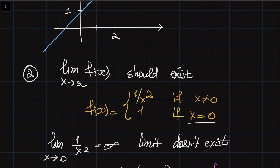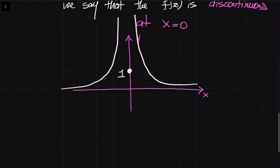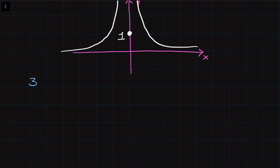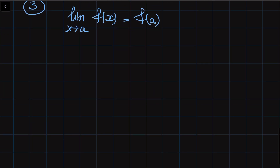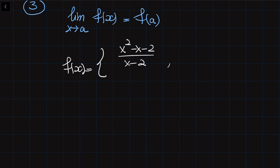There is a third situation where we say a function is discontinuous at a certain point. The third implication of the definition of continuity tells us that the limit of f(x) as x goes to a should be equal to f(a). If it is not equal, then the function is discontinuous at that point. Consider f(x) equal to x squared minus x minus 2 divided by x minus 2 if x is not equal to 2, and equal to 1 if x equals 2.